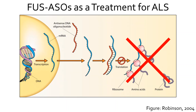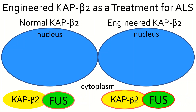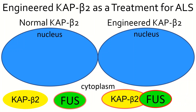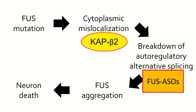A possible treatment based upon this data concerns the use of antisense oligonucleotides. FUS ASOs, as they are called, target the junction of intron 6 and exon 7 and have been shown to restore alternative splicing of exon 7 and reduce FUS concentrations in vitro. Another possible treatment involves the engineering of importin-β2, the importin for FUS. Efforts have been made to create a variant of importin-β2 that can bind and import mutated FUS into the nucleus. These two molecules target different parts of the ALS disease pathway, but both offer promising therapeutic methods for the treatment of ALS in the future.